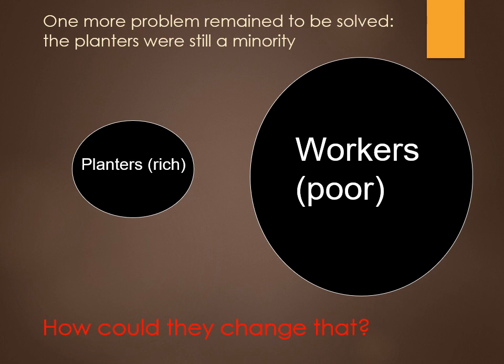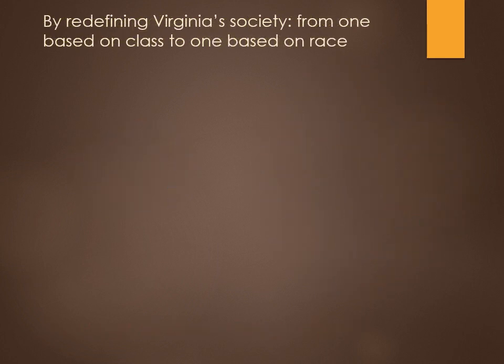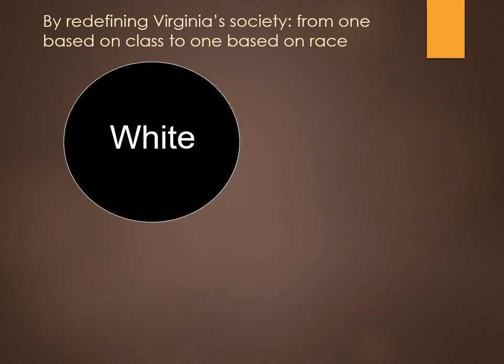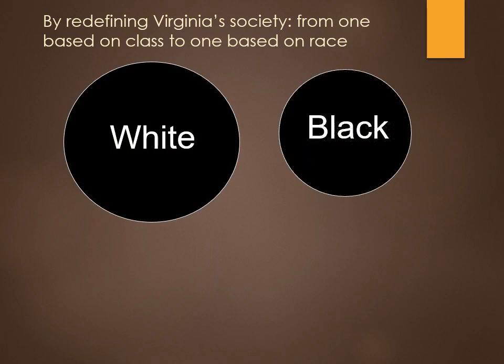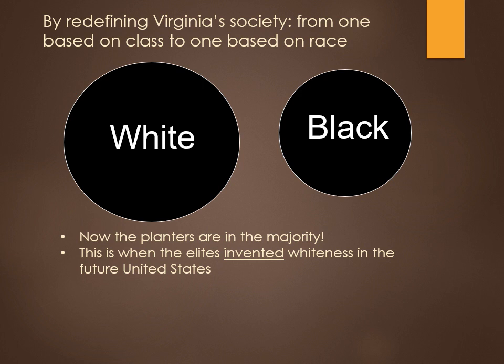There was one more problem that remained to be solved. The planters were still a minority. How could they gain firmer control of Virginia society? They could change the basis of society from class to race. So now they could become a majority — if it was not rich versus poor, but instead white versus black. So now they're in the majority. And this is when the very concept of whiteness was invented.